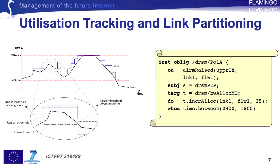The action is executed by the dynamic resource management policy enforcement point, and the target is the managed object responsible for bandwidth allocation. Note that the last line constrains the policy to be executed only during peak hours. A less aggressive increase to the allocation could be specified for off-peak hours.